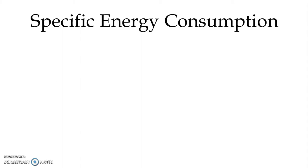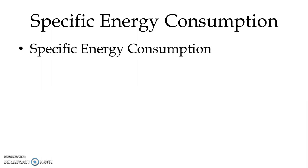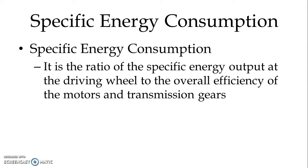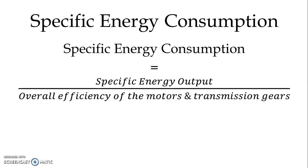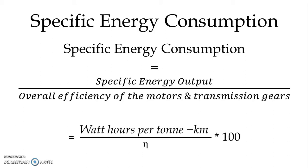Now let us define specific energy consumption. It is the energy consumed by the train as per the specifications of the train. It is the ratio of the specific energy output at the driving wheel to the overall efficiency of the motors and transmission gear. Mathematically, it is written as specific energy output divided by the overall efficiency of the motors and transmission gears, expressed in watt hours per ton km, multiplied by 100 to identify specific energy consumption in percentage.